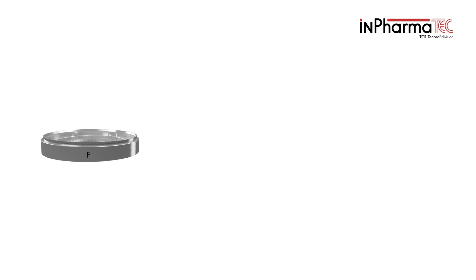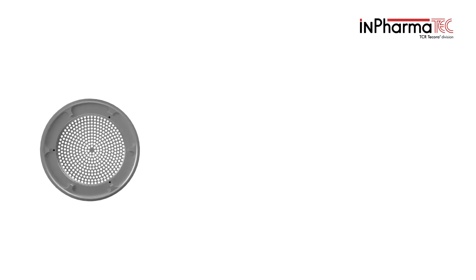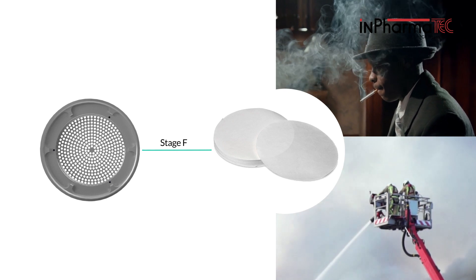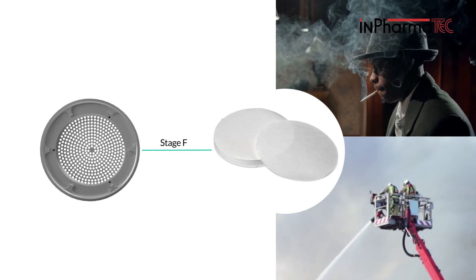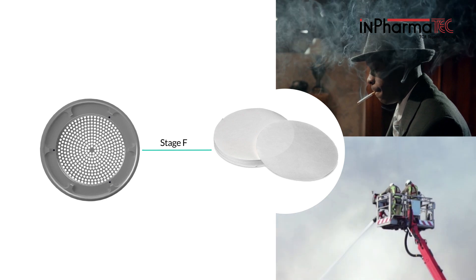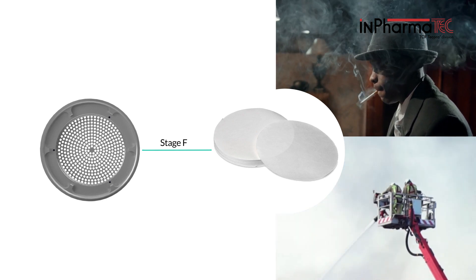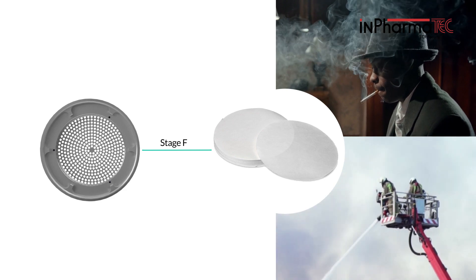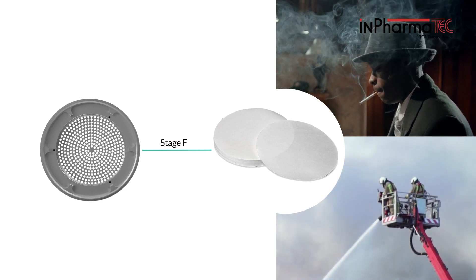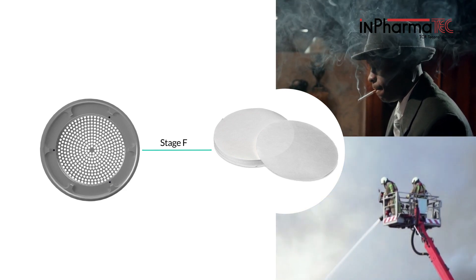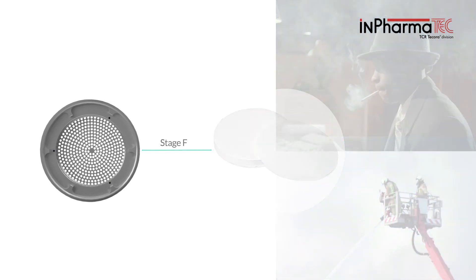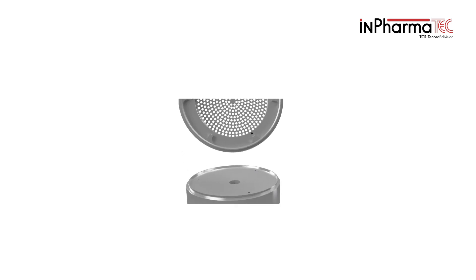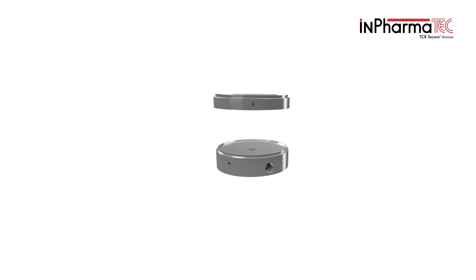Stage 5, named the filter stage, is where quartz or glass fiber filters are placed. It serves to capture the smallest particles that might have passed through the preceding stages. The primary purpose of this filter is to prevent tiny particles from reaching the pump, as these particles could potentially cause damage over time.